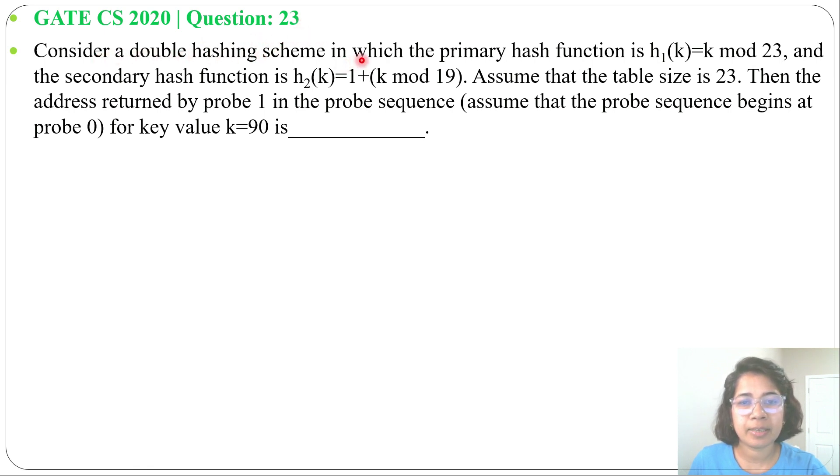Consider a double hashing scheme in which the primary hash function is h1(k) = k mod 23 and the secondary hash function is h2(k) = 1 + (k mod 19). Assume that the table size is 23, then the address returned by probe 1 in the probe sequence. Assume that probe sequence begins at probe 0 for the k value k = 90.